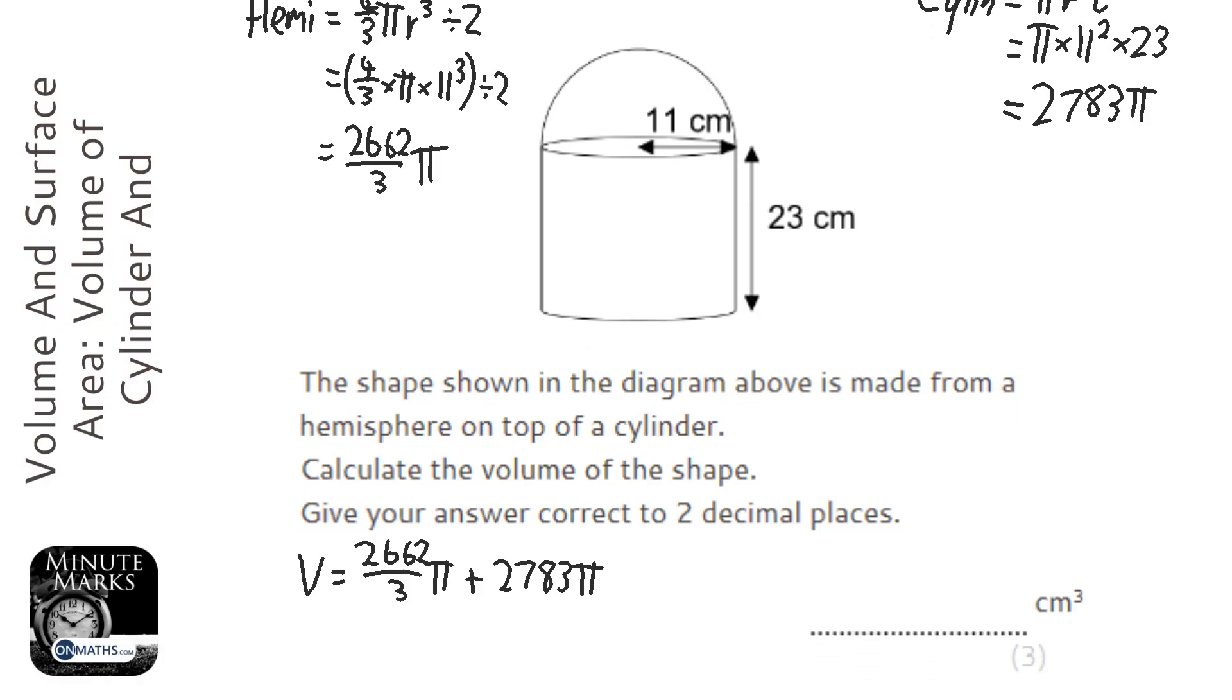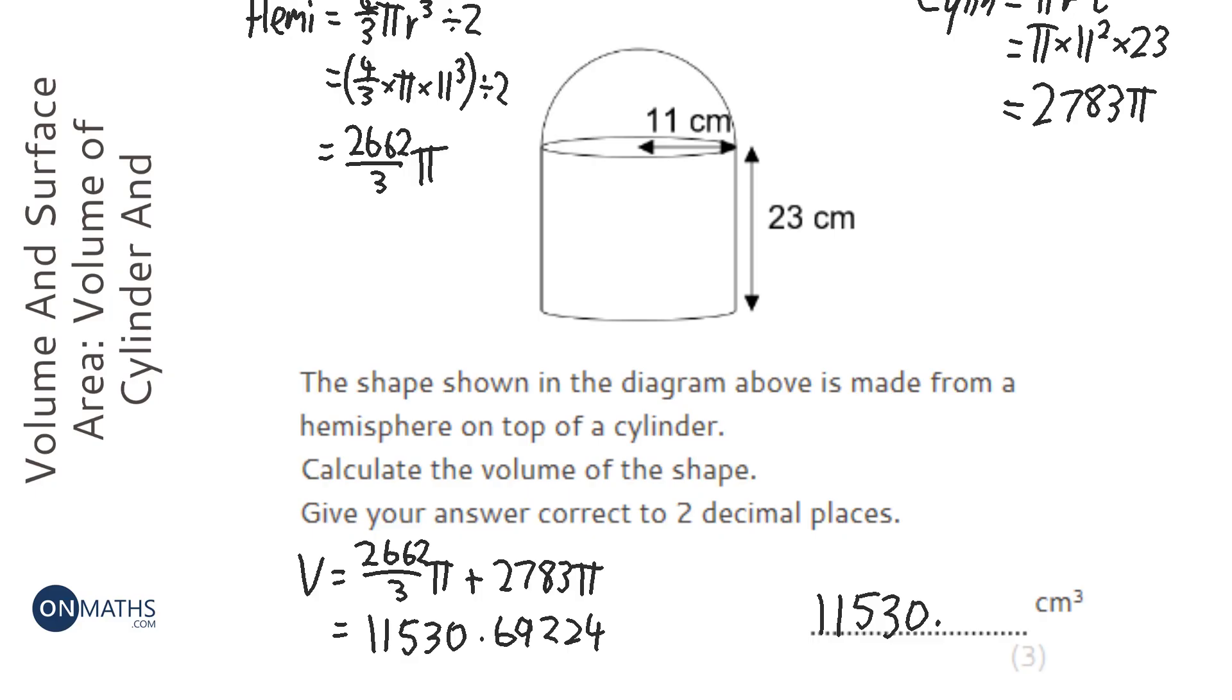And this time I've got an answer, so I'm just going to write down the decimal. You can switch between in terms of pi and decimals by the STD button on the Casio calculators. So it says it's two decimal places, so 11530.69 to two decimal places.